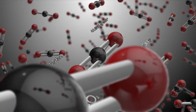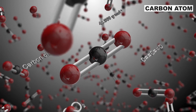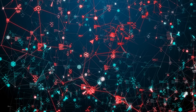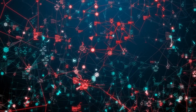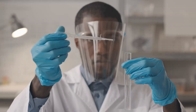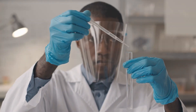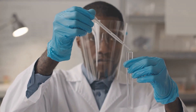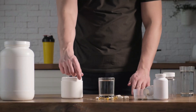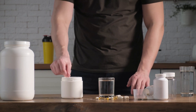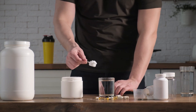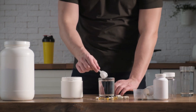Amino acids are composed of a central carbon atom bonded to an amino group (NH2), a carboxyl group, a hydrogen atom, and a unique side chain called the R group. The R group varies among different amino acids, giving each one its distinct properties and functions.